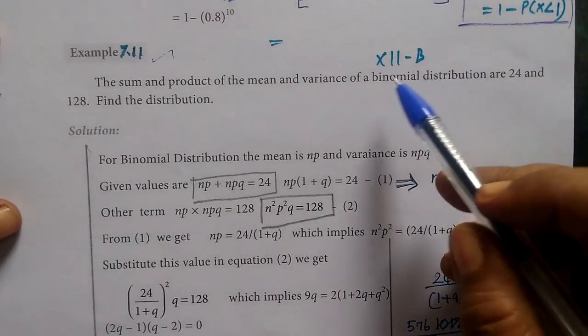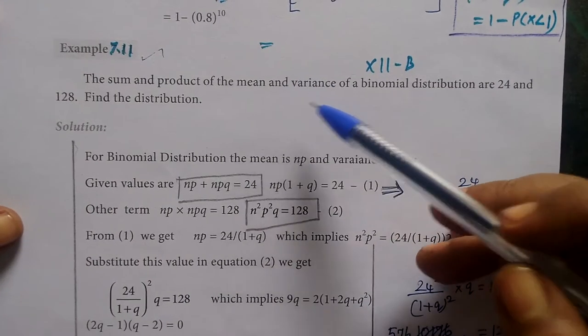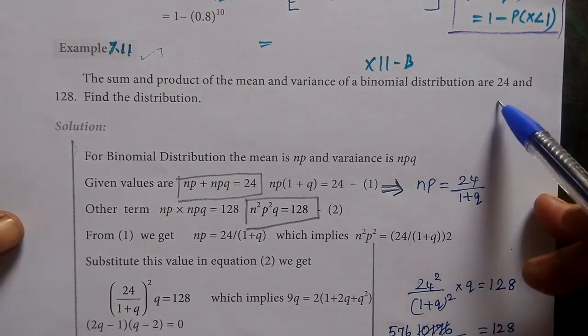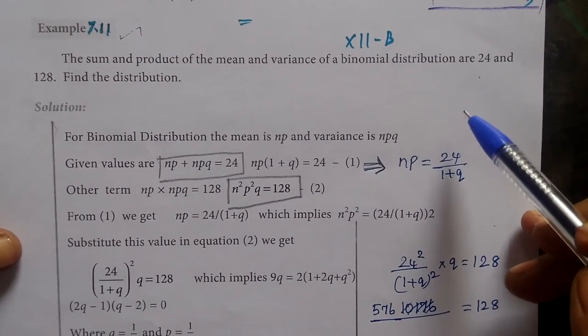So, next 12th business math, example 7.11. The sum and product of the mean and variance of a binomial distribution are 24 and 128. Find the distribution.